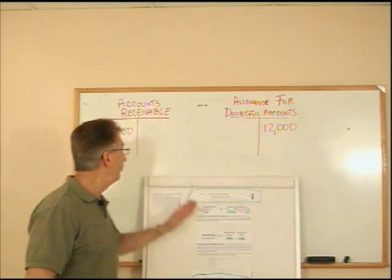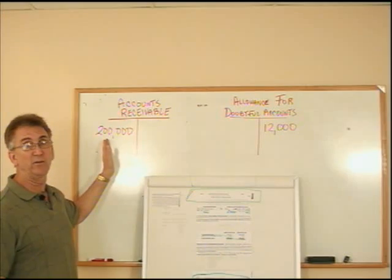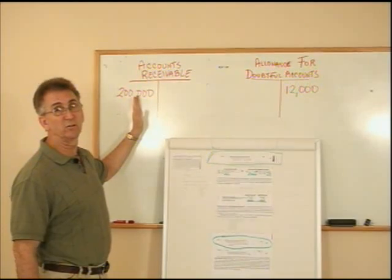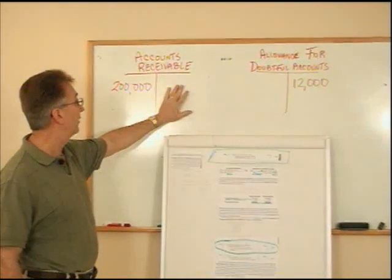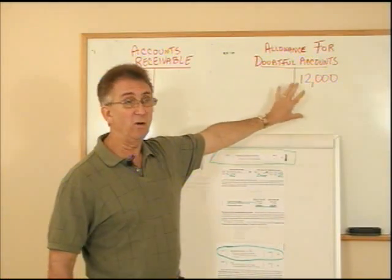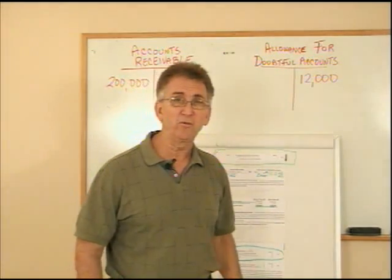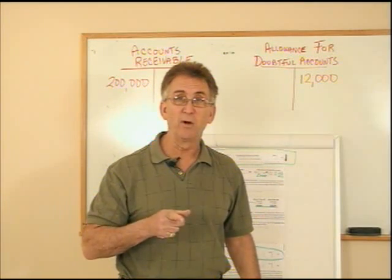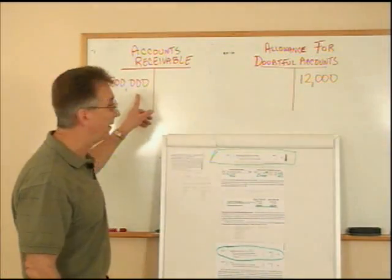What happens during the year is this number goes up and down depending on my sales. As I make more sales on credit, I debit accounts receivable, and as I collect my money, I credit my receivable and make it go down. This allowance number can also change — when I go through my receivables every month and I see the same name on there month after month that has owed me money and I'm getting tired of seeing that name pop up.